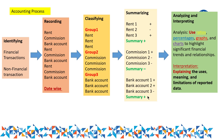Now let's go a bit deeper into the step of analyzing and interpreting. Analyzing simply means using ratios, percentages, graphs, and charts to highlight significant financial trends and relationships. After summarizing, we make financial statements — we'll explain those later — and then we apply the steps of analyzing and interpreting using various tools to find the relationships and trends among items of financial statements.